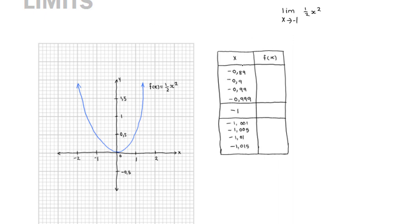In order to investigate this, I have a table of data. We are going to have x values that we plug into our f of x, and that's going to give us outputs f of x. Now we know that f of negative 1 is simply 0.5, and we can see that on the graph. But we are not actually interested in what the function equals at negative 1 — what we are more interested in is what the function is doing as we approach negative 1 from the right-hand side and from the left-hand side.